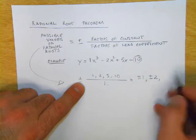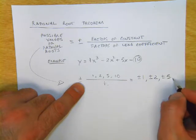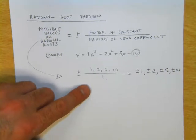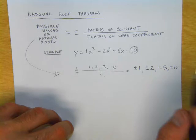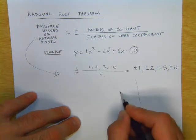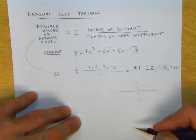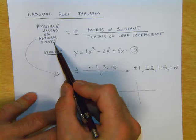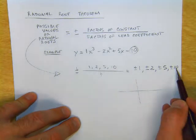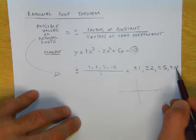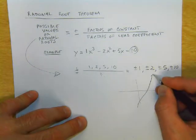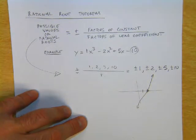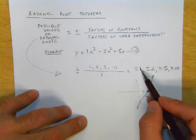When you graph this polynomial and it crosses the x-axis, if there is a rational root, it will be one of those numbers. When you graph it, it turns out that of the eight possibilities, the only rational root is +2.